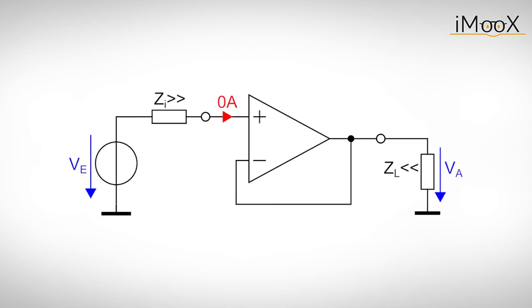This circuit is used as an impedance transformer for signal sources with high internal impedance ZI. The high input impedance of the voltage follower puts virtually no load on the signal source, while offering a small output impedance to drive the connected load ZL.